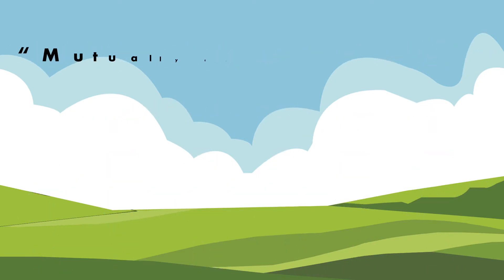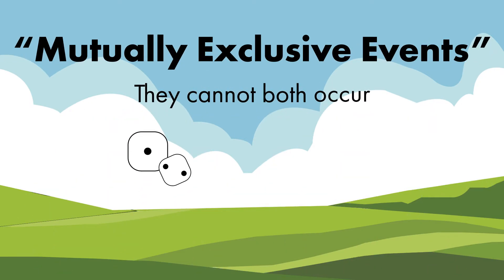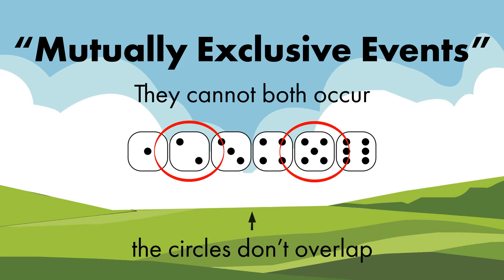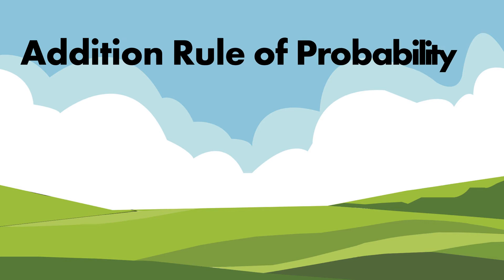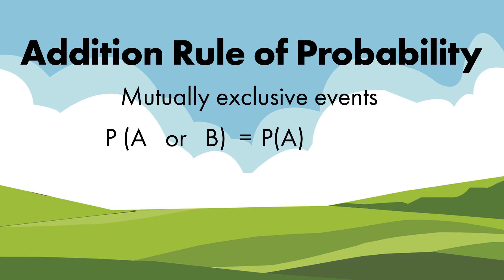We'll start with two mutually exclusive events, which means they cannot both occur. For example, rolling a two or a five — it's not possible to roll both in a single roll. The addition rule says the probability of at least one of two mutually exclusive events occurring is simply the probability of the first event plus the probability of the second event.